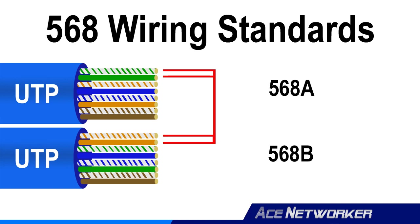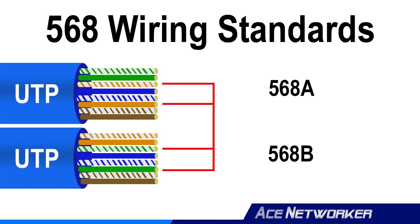Notice that the only thing that really changes between the two is that the orange wires exchange places with the green wires. The blue and brown pairs remain the same. There's no defined rule on which standard has to be used on your network, but you need to understand how the two standards come into play.